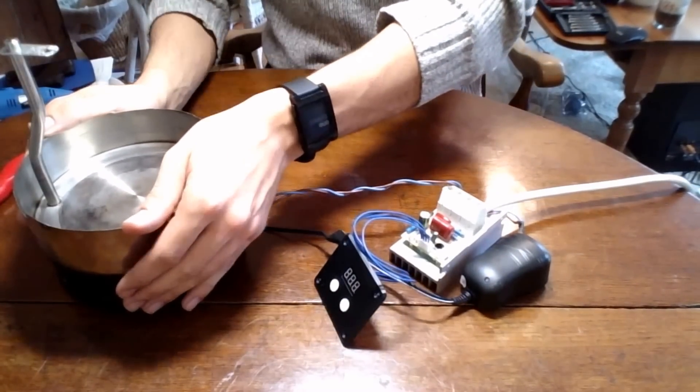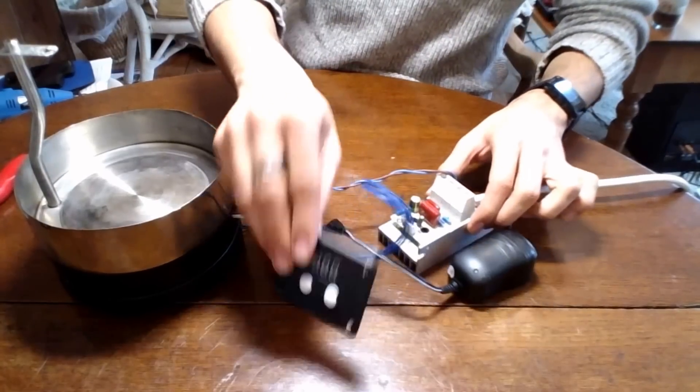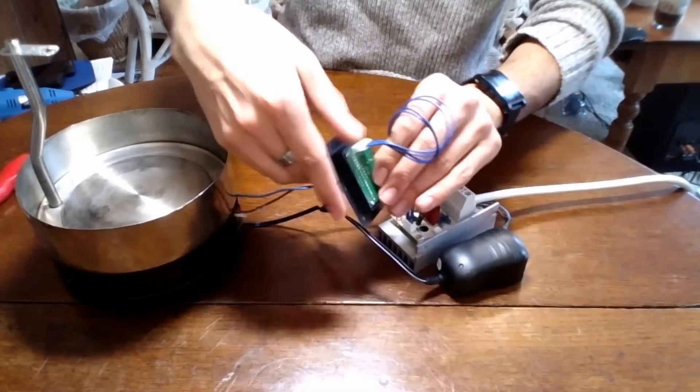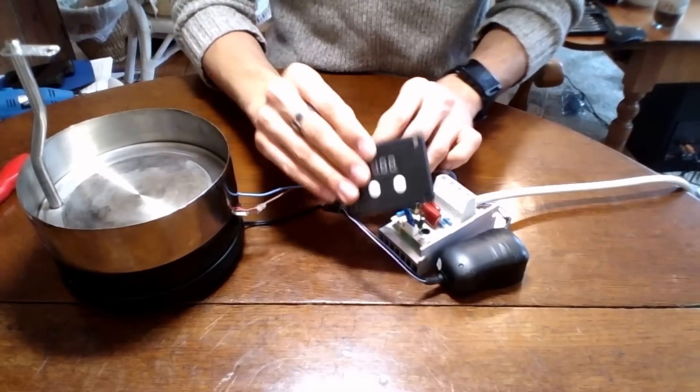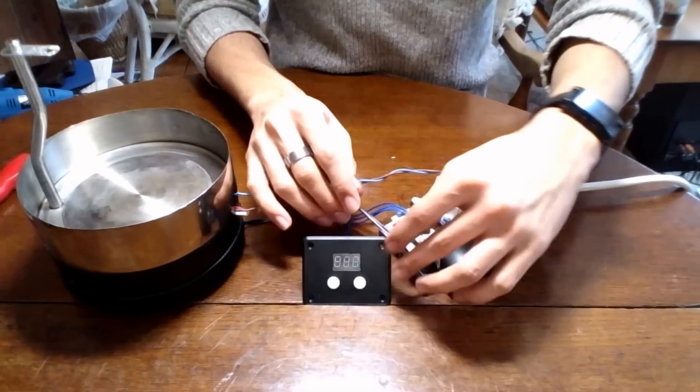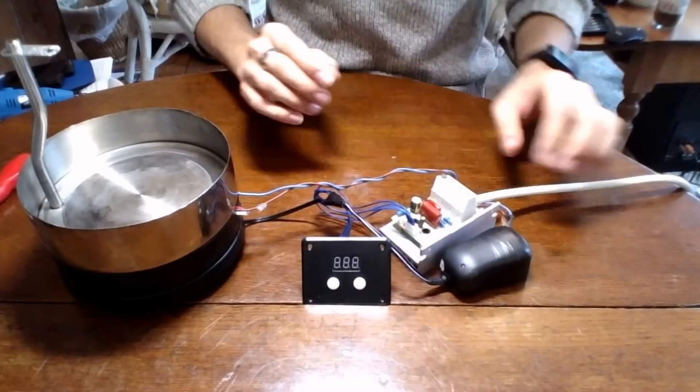Now for the variable control, what I've done is I have this digital voltage controller, and that's just for the heating element, and that's just to control the power going to that and how hot that gets.